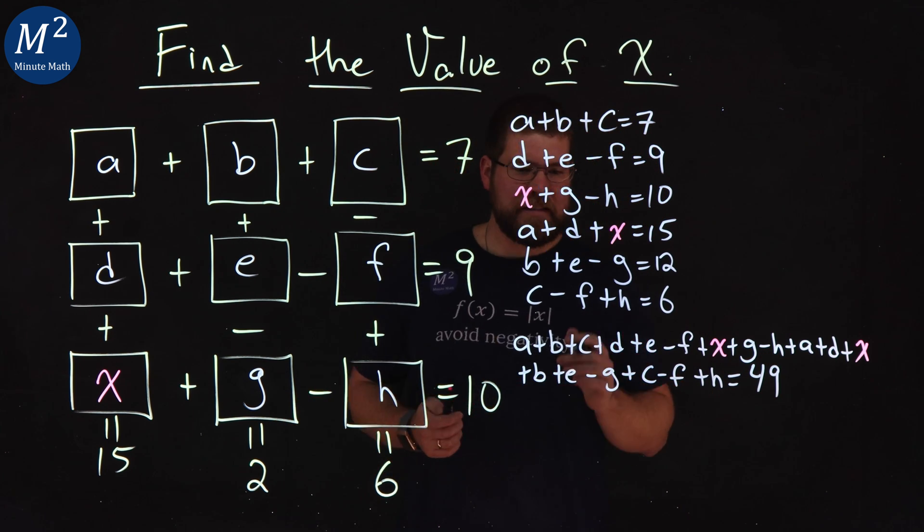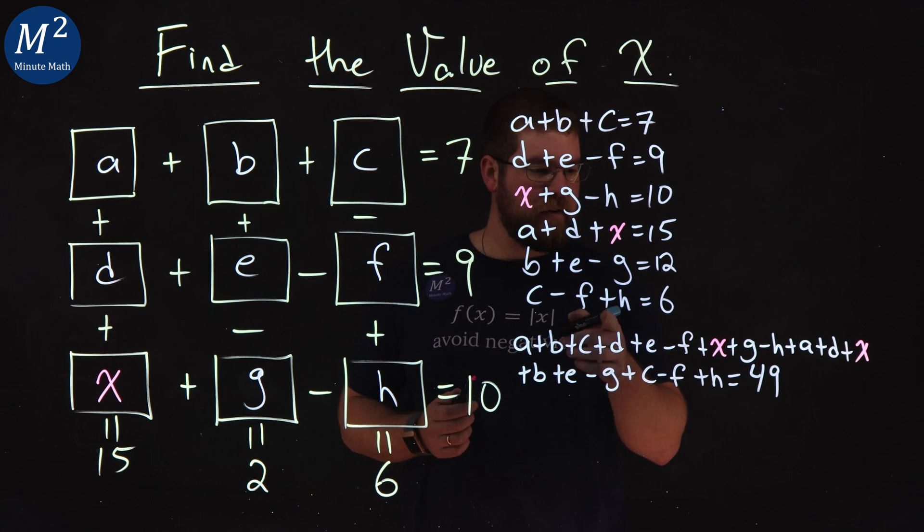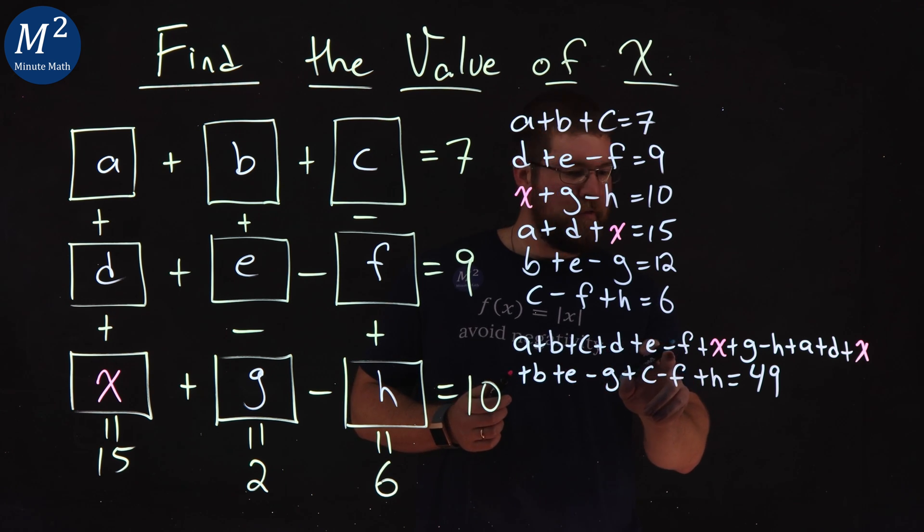So what I'm going to do here is see if I can cancel out some values. I'm going to kind of look through and see, especially the negatives and a positive. So as I'm going here, what do we have? We have a negative F. Do I have a positive F anywhere? No, I have two negative Fs.